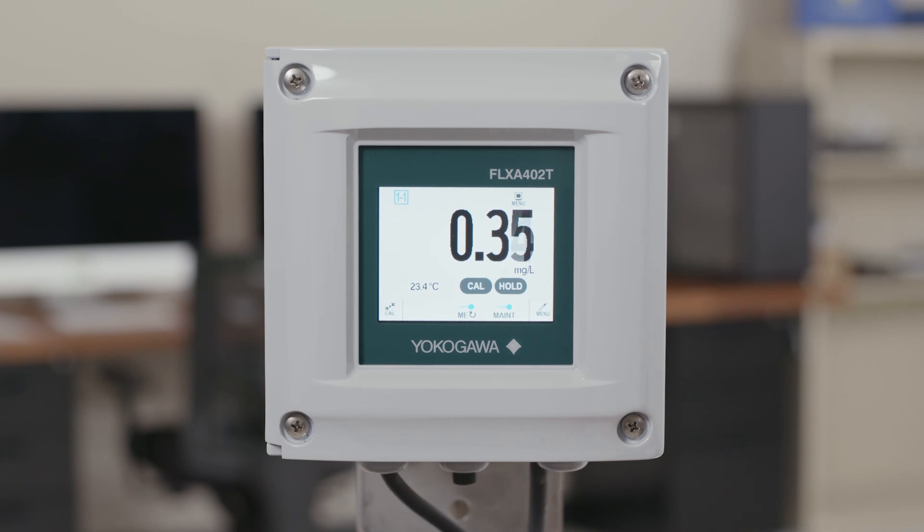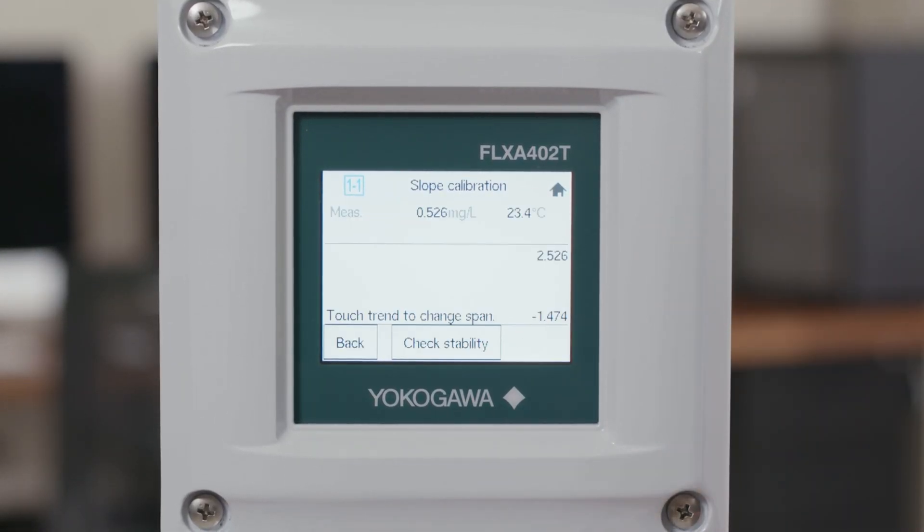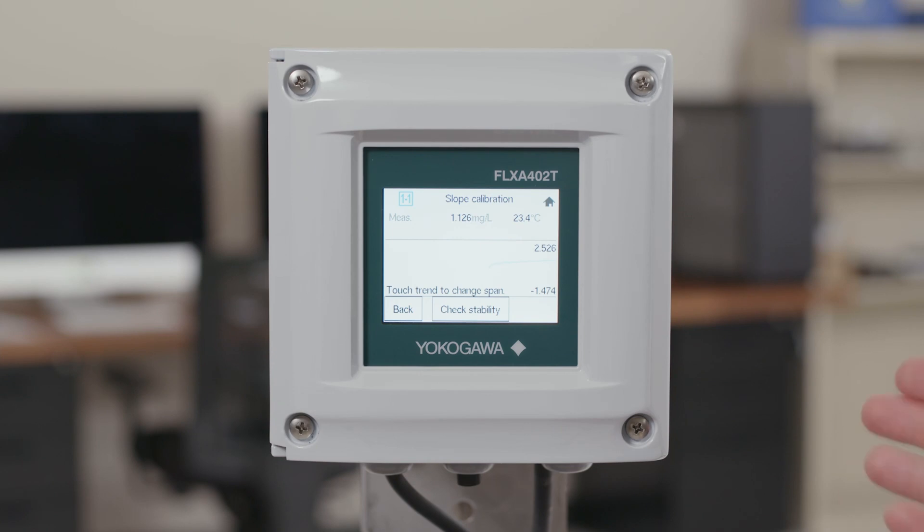Just like your zero calibration, you want to make sure that you're in maintenance mode and click the calibration button on the home screen. From here you will select slope calibration. Once you do this you'll see a familiar screen that will show your current measured value as well as a back and check stability button. As long as your reading is fairly stable, go ahead and click check stability.